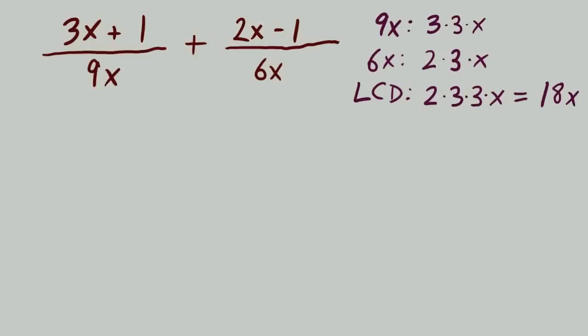The first denominator, 9x, I have factored as 3 times 3 times x. The second denominator, 6x, factored as 2 times 3 times x. Building the LCD, we'll need 1, 2. We'll need 2 threes because this list does have 2 threes. And we will need just 1x. This list has 1x. This list has 1x. So we only need 1x. And multiplied together would give us 18x.